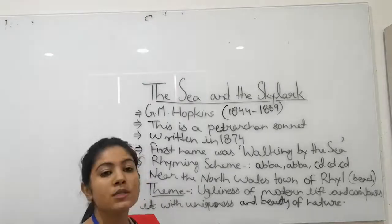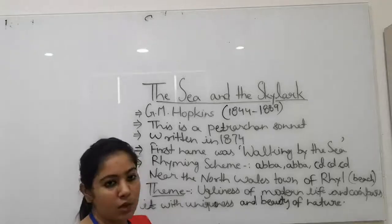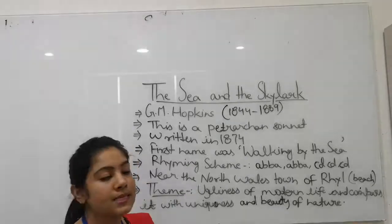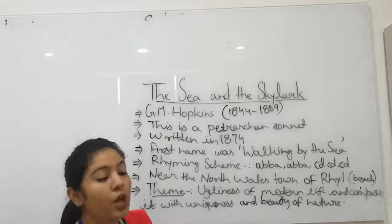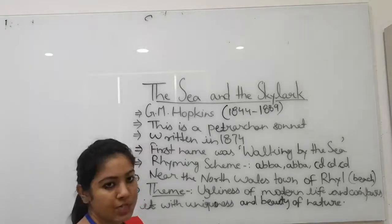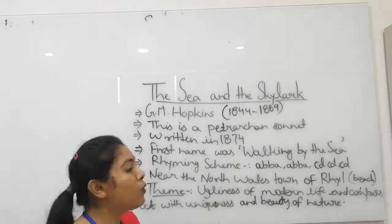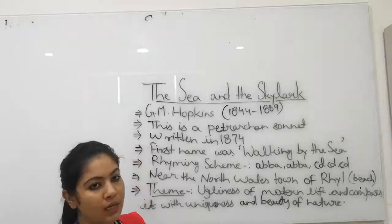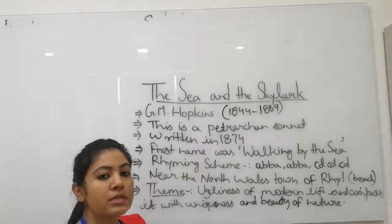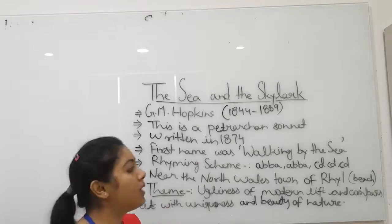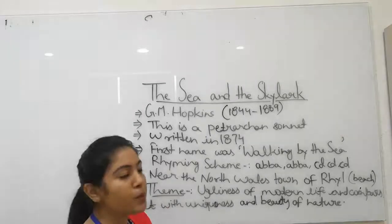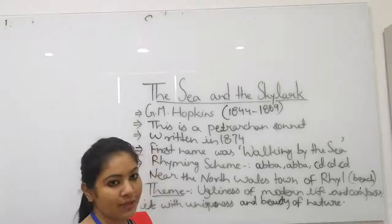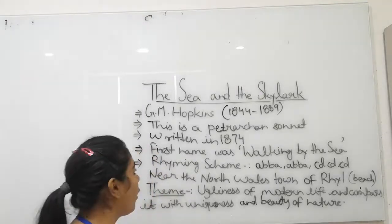Doosra sonnet ka English sonnet hota hai, jise Shakespearean sonnet bhi bola jata hai. Petrarchan sonnet mein jo 14 lines hai woh divided hoti hai octave plus sestet mein. Aur jo English ya Shakespearean sonnet hai, us mein jo 14 lines hai woh divided hoti hai three quatrains aur one couplet mein — quatrain mein sense four lines, one quatrain — four plus four plus four plus two. I hope aapko sonnet ka definition bhi, agar nahi pata tha, toh clear ho gaya hoga.